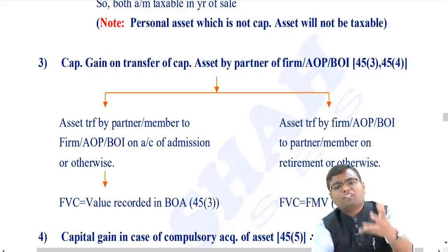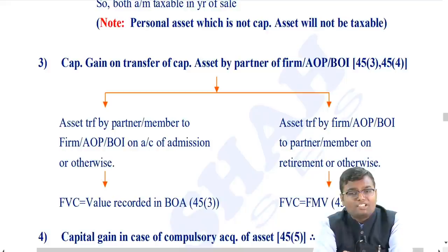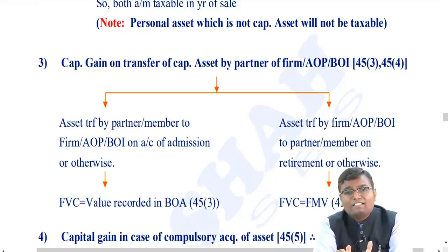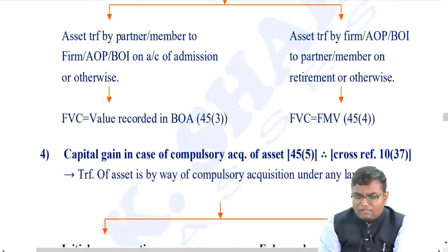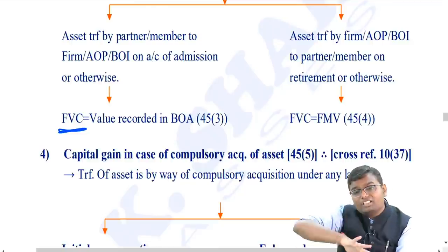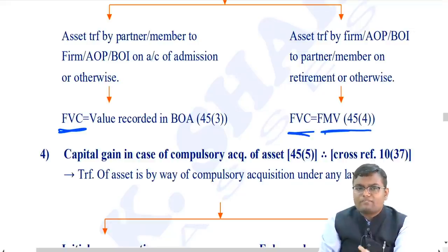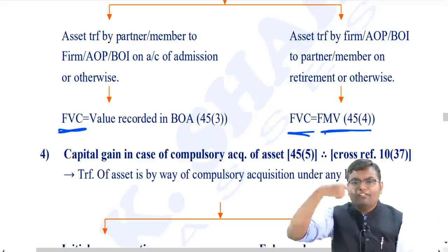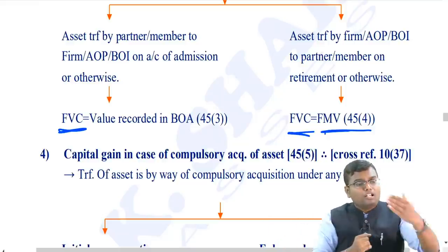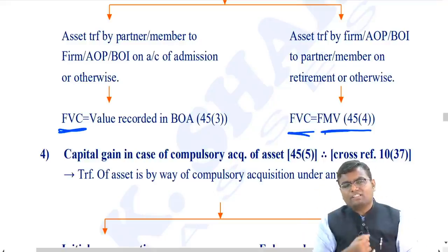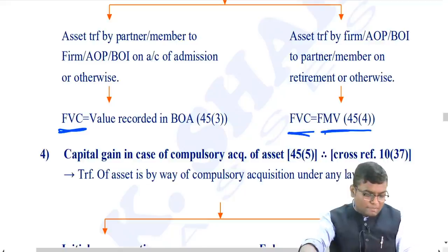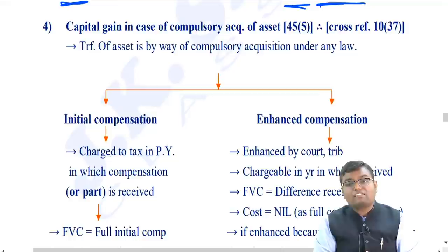Section 45(3) and 45(4): When a partner gives an asset to the partnership firm, the full value of consideration is the value recorded by the firm in its books. When the firm gives an asset to a partner (on retirement, etc.), capital gain is attracted for the firm, and full value of consideration is the fair market value on the date of transfer.